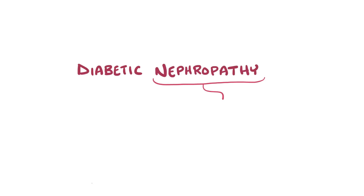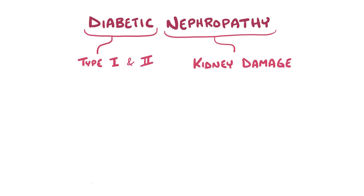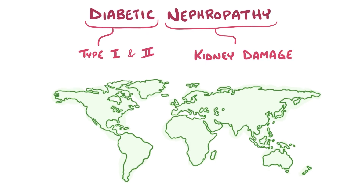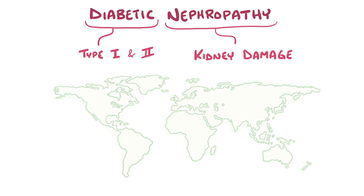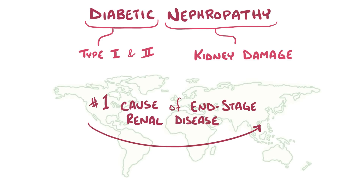Diabetic nephropathy refers to the kidney damage caused by both type 1 and type 2 diabetes. Because of the growing number of people affected by diabetes, diabetic nephropathy is currently the leading cause of end-stage renal disease in most developed countries around the world.